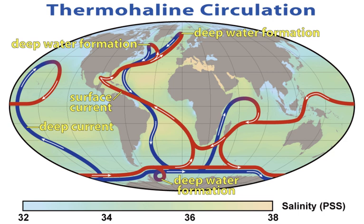Ocean acidification describes the decrease in ocean pH that is caused by anthropogenic carbon dioxide emissions into the atmosphere. Seawater is slightly alkaline and had a pre-industrial pH of about 8.2. More recently, anthropogenic activities have steadily increased the carbon dioxide content of the atmosphere; about 30–40% of the added CO2 is absorbed by the oceans, forming carbonic acid and lowering the pH now below 8.1 through ocean acidification.